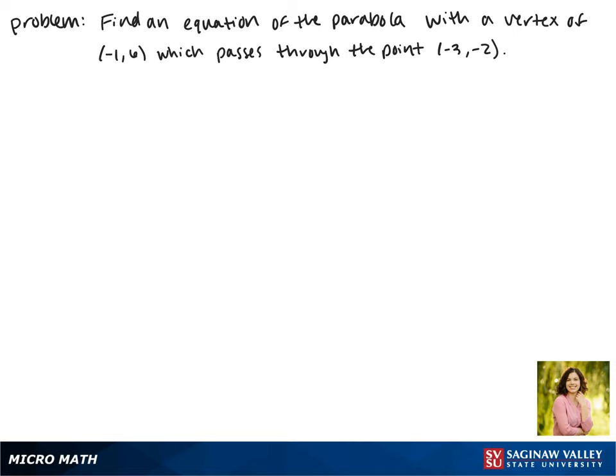Today we'll be finding an equation of the parabola with a vertex of negative 1, 6 which passes through the point negative 3, negative 2.